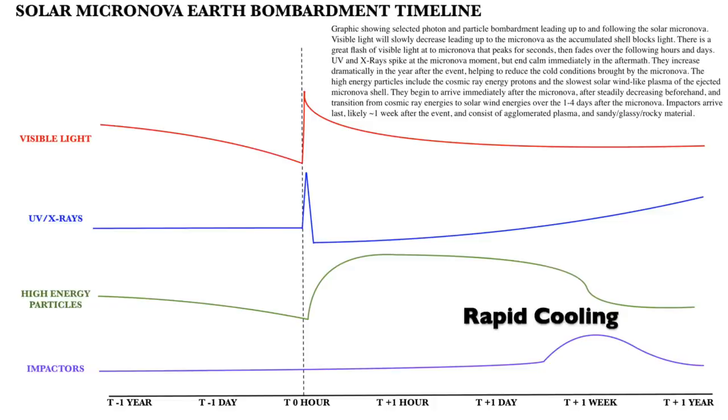This dusty condition is what will trigger the major cooling of Earth, since it will not only block sunlight as it resides between the Earth and Sun, but also accumulates in the upper atmosphere, like a volcanic or nuclear winter situation.